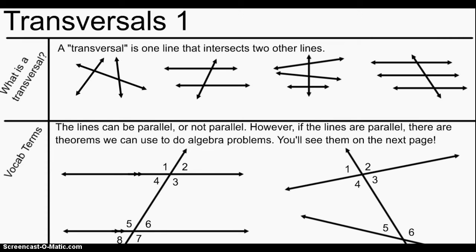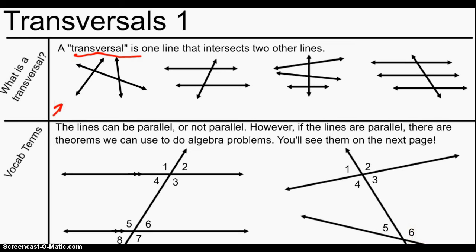First, what is a transversal? Well, a transversal is one line that intersects two or more other lines. So if you'd like to, pause the video here and try to circle which of these lines are transversals in these four pictures.